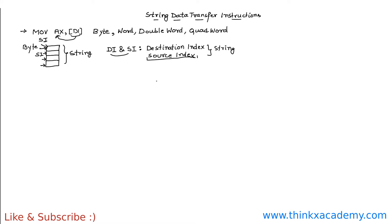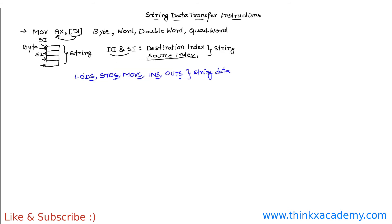Now let's study the types of string data transfer instructions we are going to cover. There are various types: LODS, STOS, MOVS, INS, and OUTS. We can know they are string instructions because at the end of each word we have an S, which represents that they are string data transfer instructions. In this tutorial we are going to start with the very first instruction, which is the LODS instruction, and we will see how it uses a string of data.